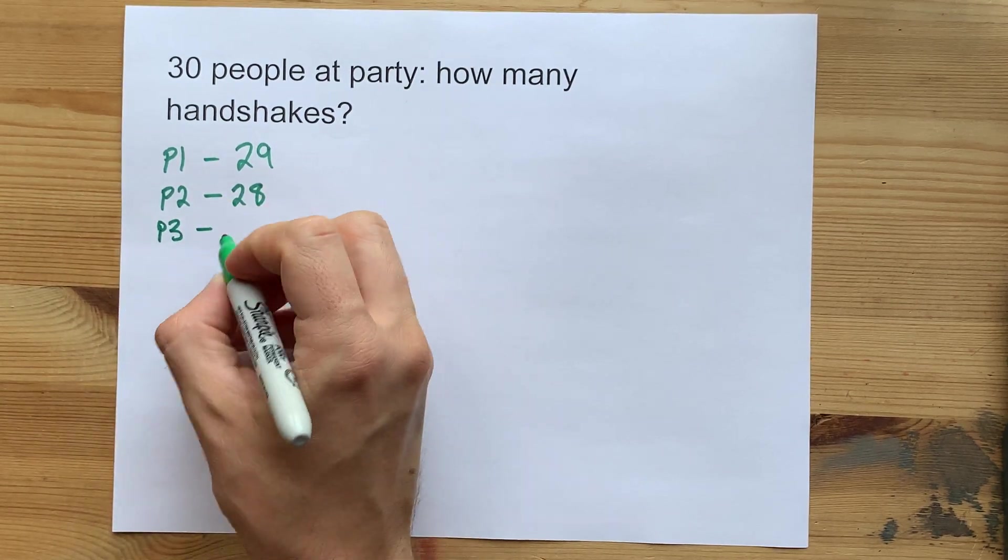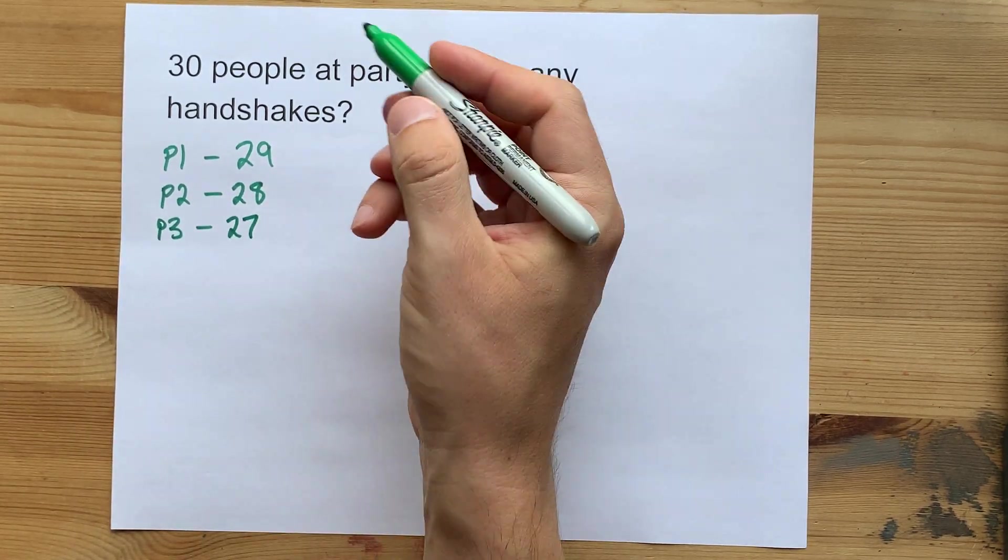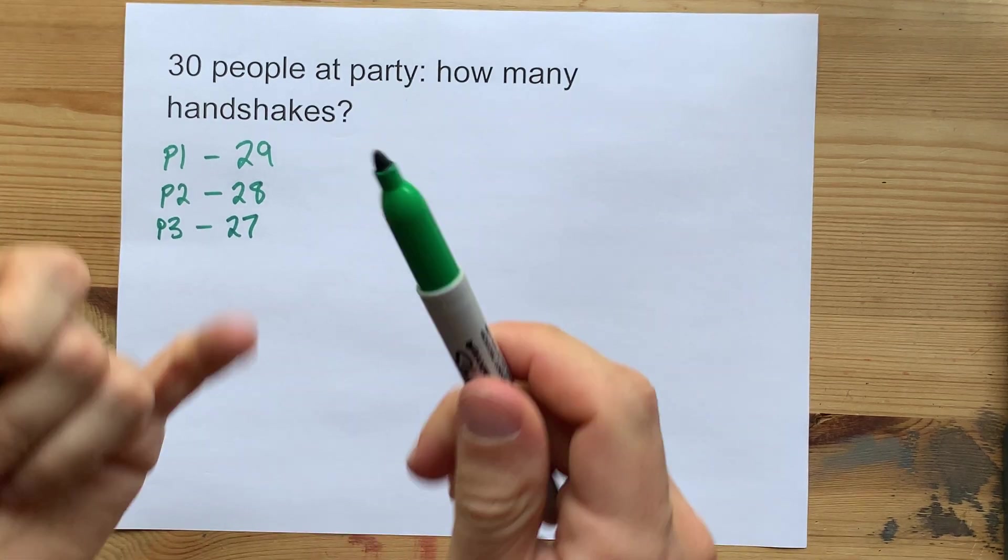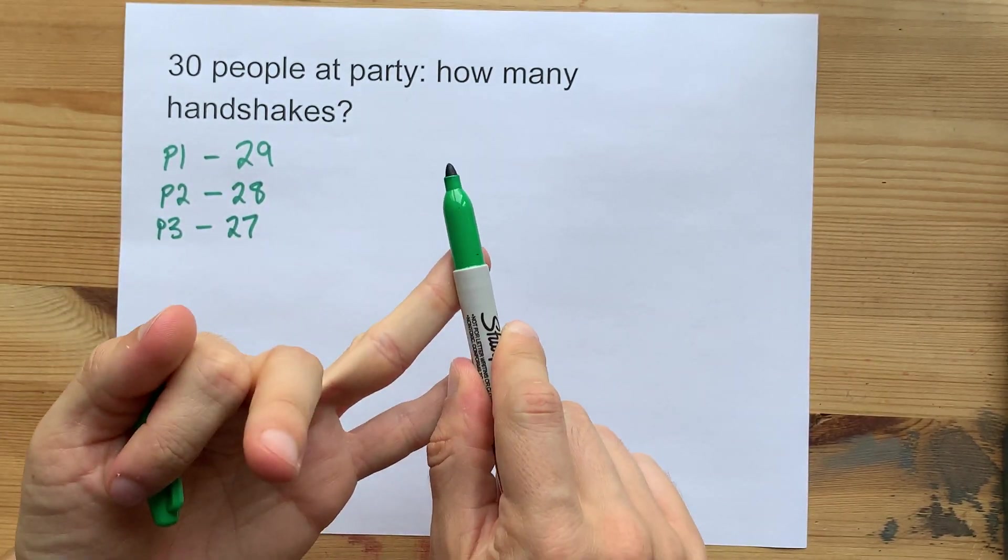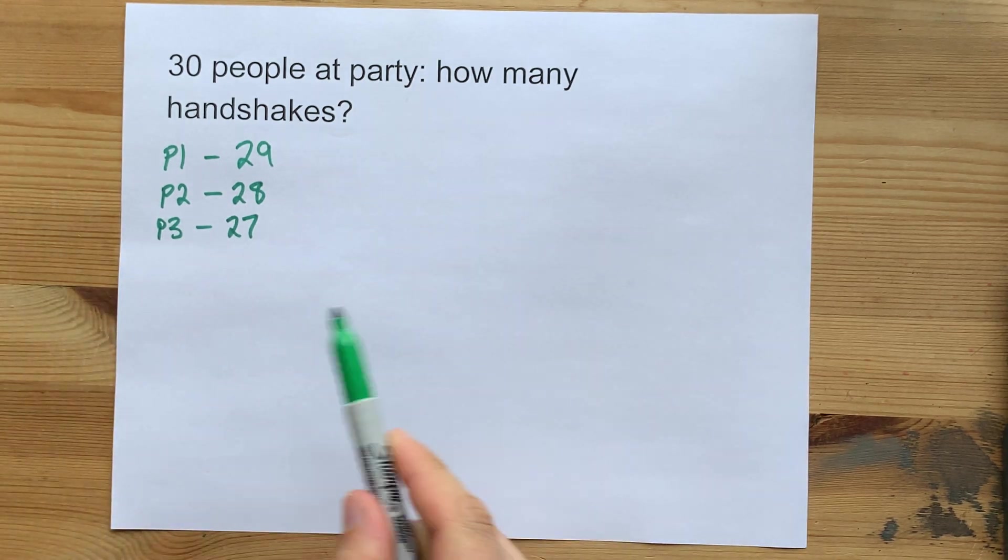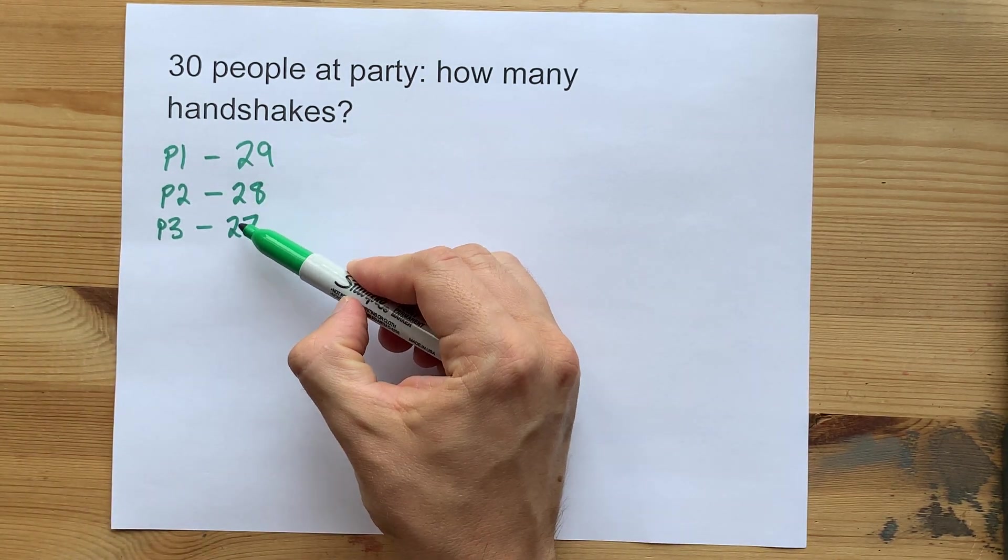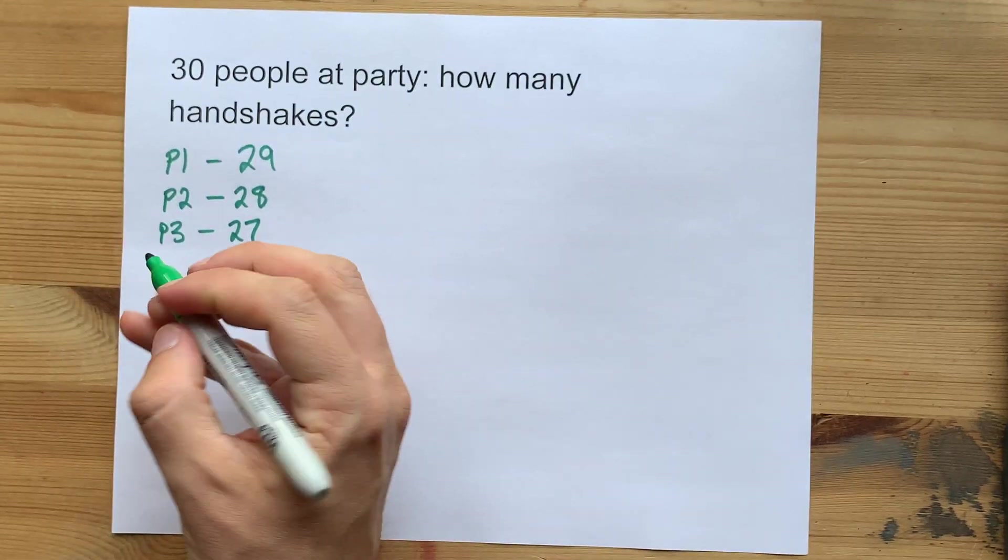Person three needs 27 more handshakes because they're not going to do it with themselves. We've already counted their handshake with person one and person two. You can probably already see the pattern here.